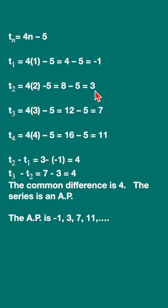Let us see what is the common difference. t2 minus t1 is 4. t3 minus t2 is 4. Even if you do t4 minus t3, it will be 4. 11 minus 7 is 4. The common difference is 4.